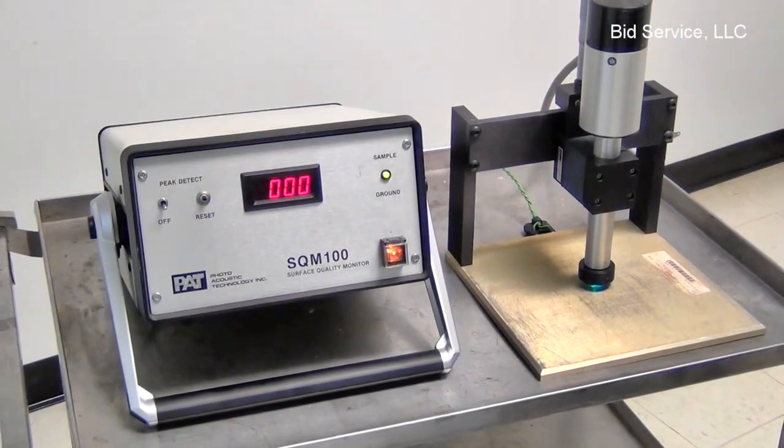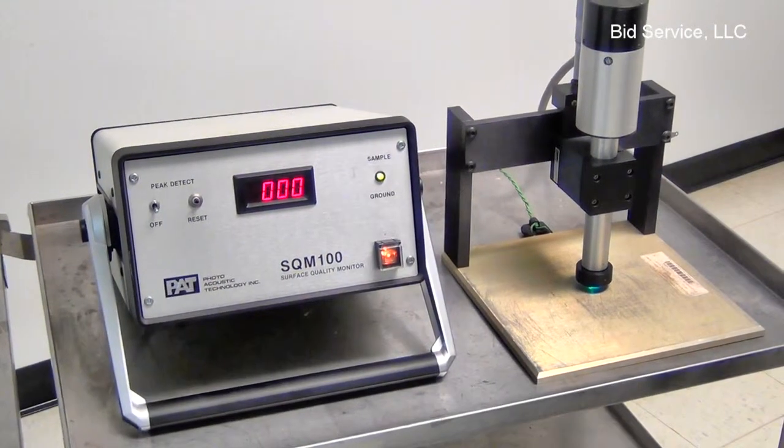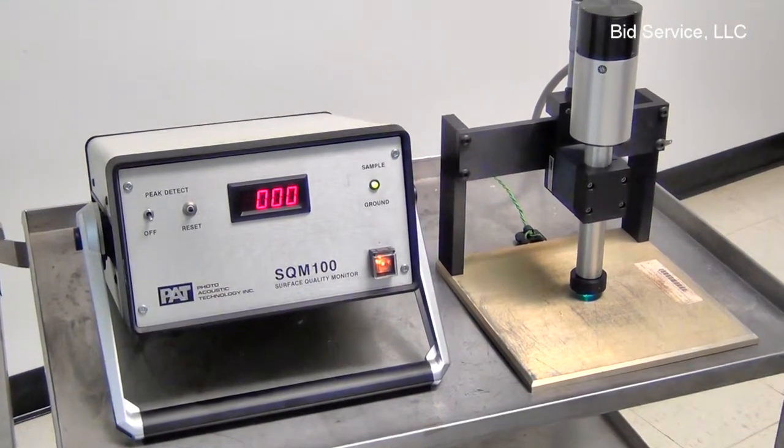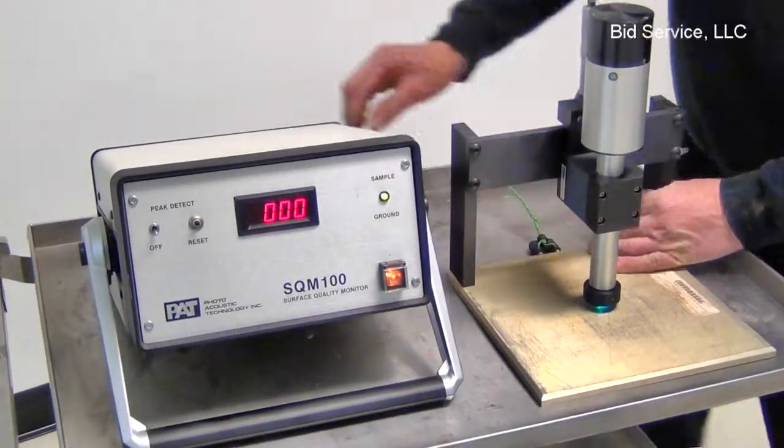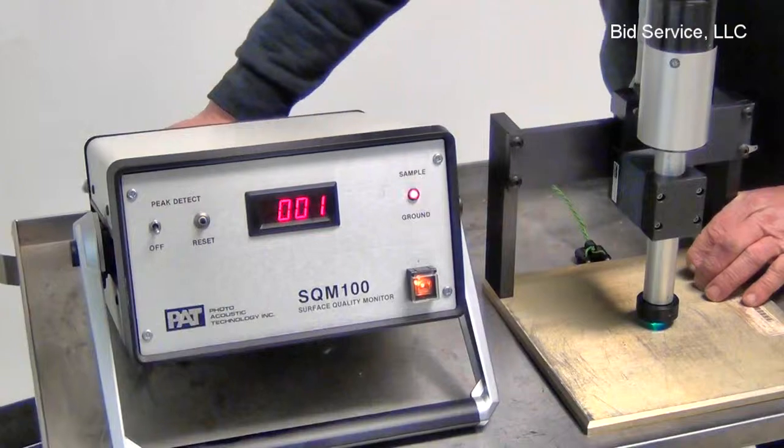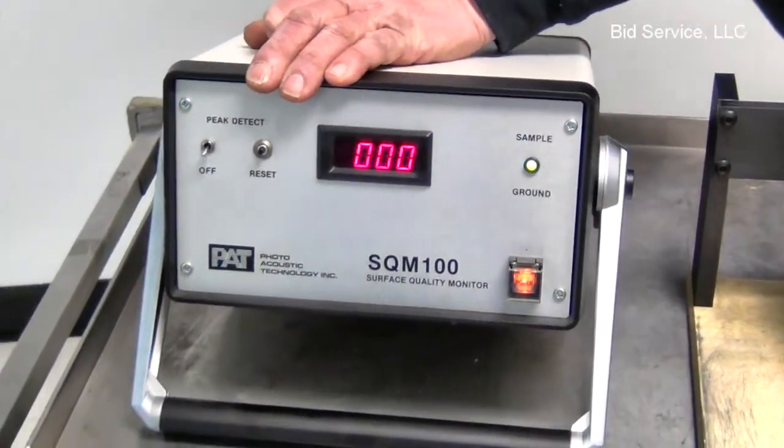It is also essential that the test surface to be monitored is well grounded to the console. If it fails to be grounded, a light will flash and you will not be able to achieve an accurate measurement.